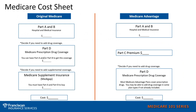First, you need to decide which type of plan you would like to enroll into. Would you like to stay with Original Medicare and add a supplement? Or would you like to go with a Medicare Advantage plan that replaces Original Medicare? This sheet here can help you decide what your costs are and your premiums with each type of plan.